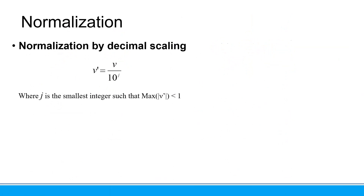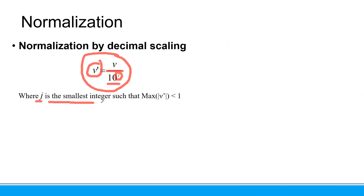There is another normalization called normalization by decimal scaling. The formula is: V' = V / 10^j, where j is the smallest integer such that the maximum of |V'| is less than 1.